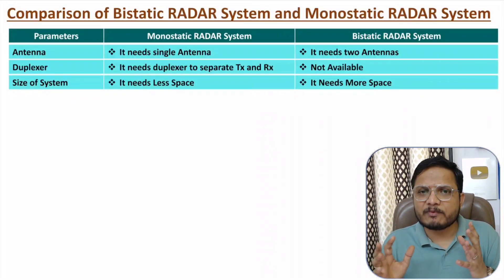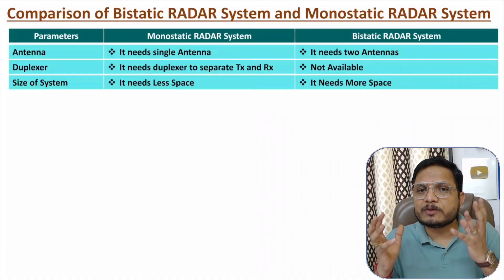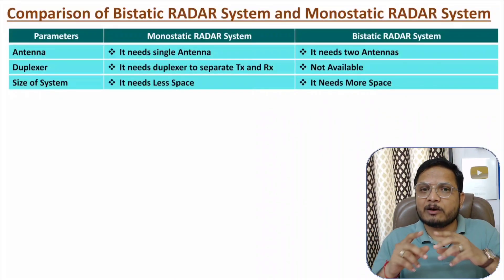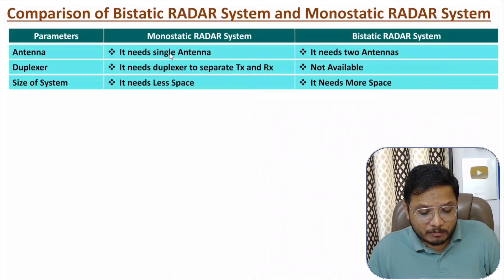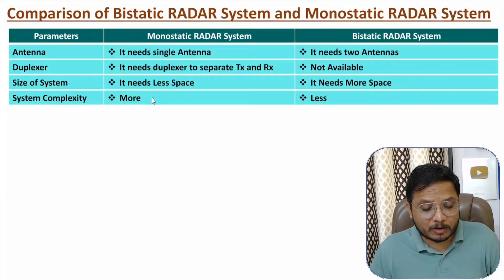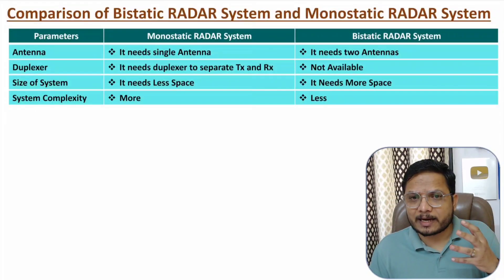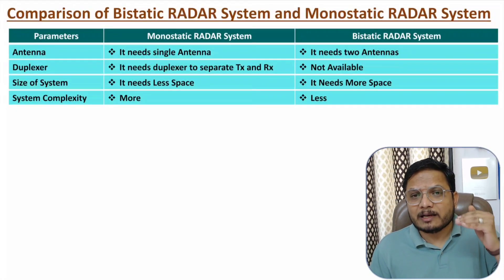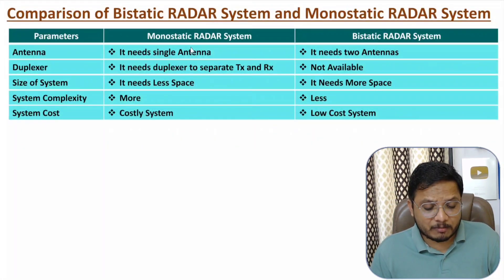Radar antennas are very large in size. In the bistatic radar system, two antennas are used, so the entire size of the system is larger. With monostatic we need less space because only one antenna is used, while with bistatic we need more space as two antennas are required. In terms of system complexity, the monostatic radar system is more complex because of the duplexer circuit which isolates the high power transmitter and low power receiver. The bistatic radar system is less complex.